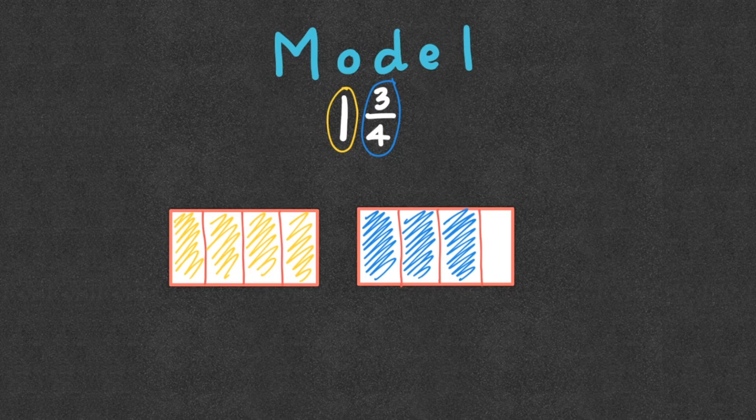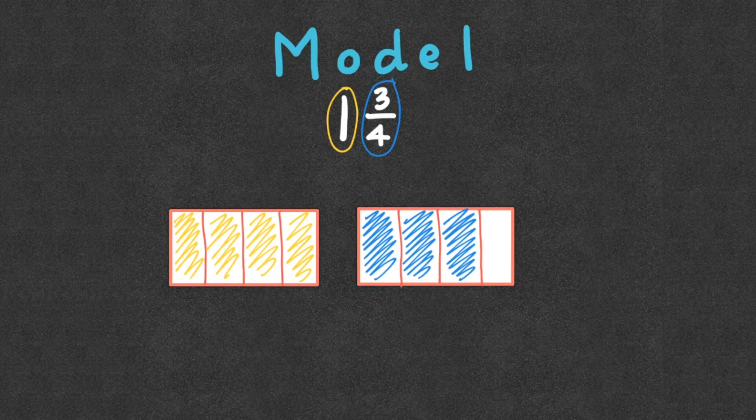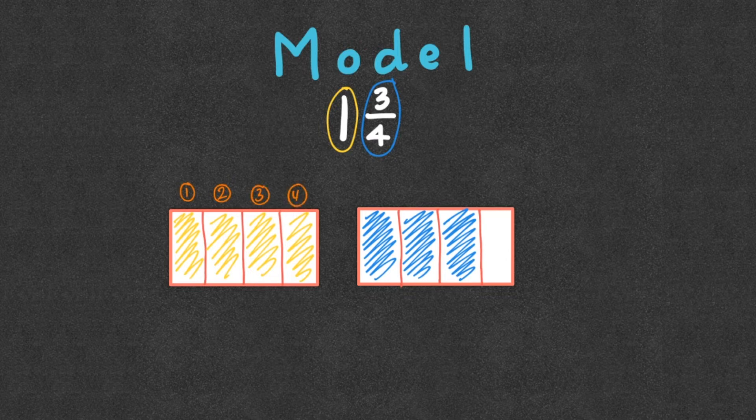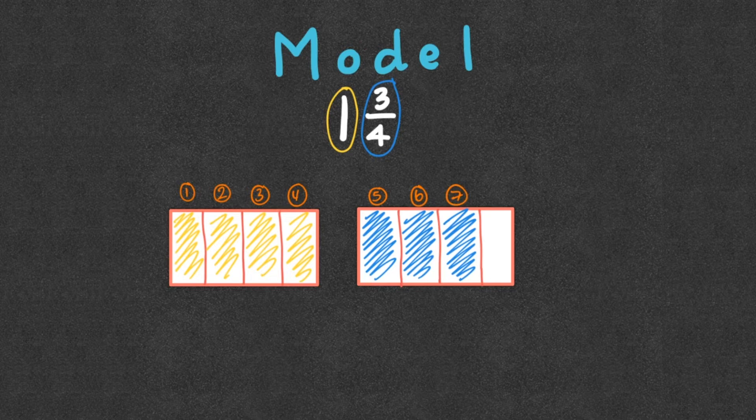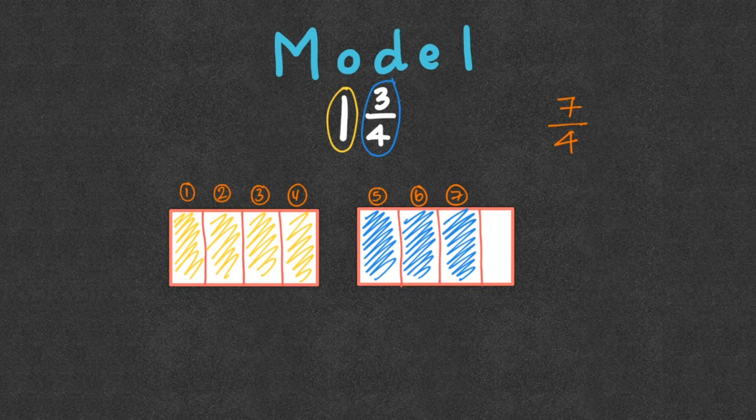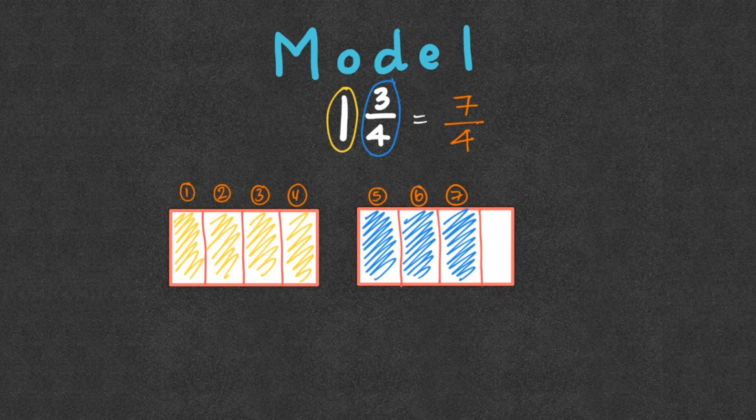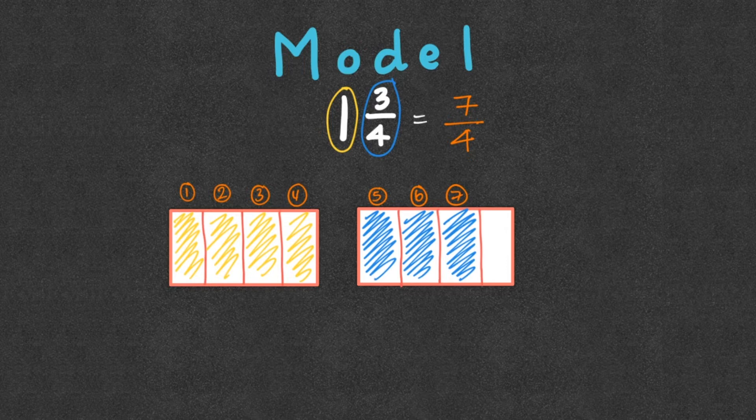So that's my model for 1 and 3 fourths. But I can also ask, how many fourths do I have? Well, I have 1, 2, 3, 4, 5, 6, 7. So I have 7 fourths filled in. Which means that 1 and 3 fourths is equivalent to 7 fourths. They take up the same amount of space, but they're written two different ways. So if you need to draw a model for these, you absolutely can.